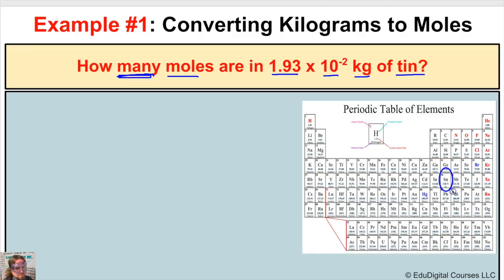Taking a closer look at tin, what we can gather from this little box on our periodic table is the molar mass of tin. This number right below the chemical symbol tells us that for every one mole of tin it is going to have a mass of 118.71 grams of tin. We can also say that this many grams of tin will contain 6.02 times 10 to the 23rd atoms of tin — that's Avogadro's number.